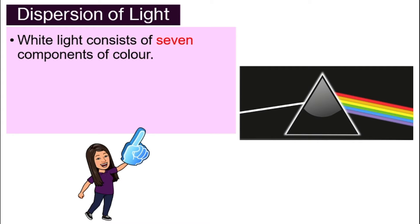This is because white light actually consists of seven components of color, the beautiful color of the rainbow in this order: Red, orange, yellow, green, blue, indigo, and violet.